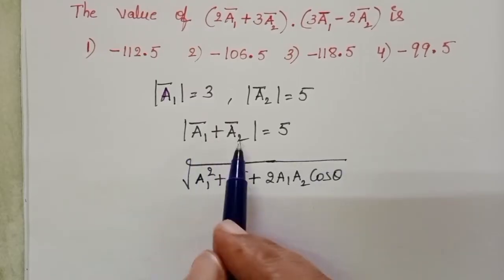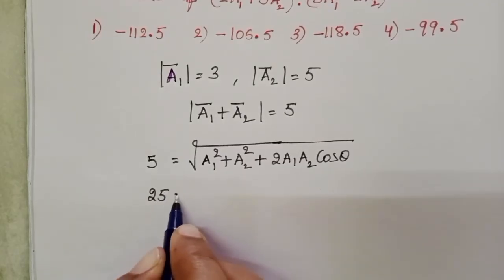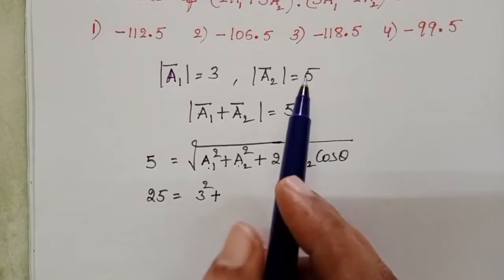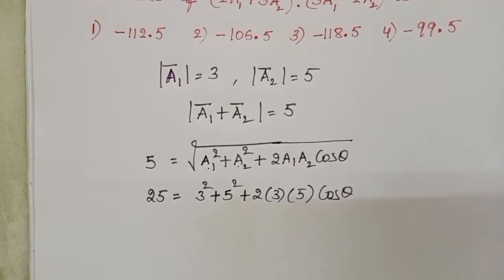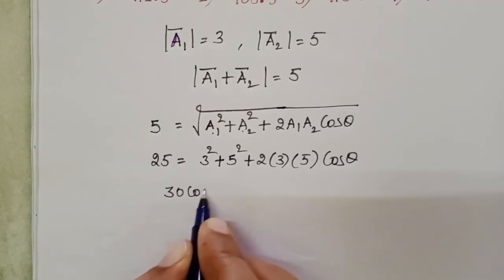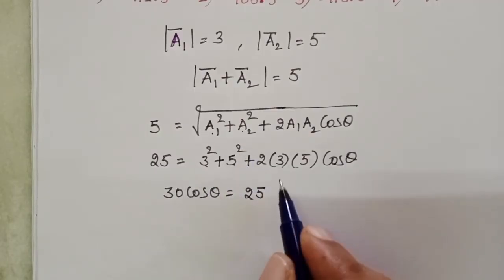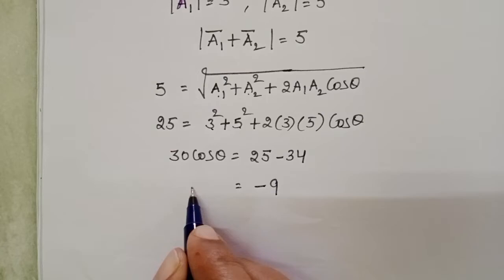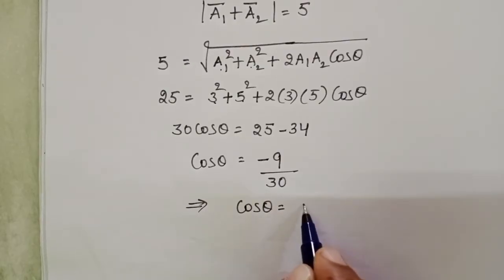The resultant of the two vectors a1 and a2 is 5. Squaring both sides: 25 equals 3 squared plus 5 squared plus 2 times 3 times 5 cos theta, which gives 25 equals 9 plus 25 plus 30 cos theta. Rearranging: 30 cos theta equals 25 minus 9 minus 25, so 30 cos theta equals minus 9, giving cos theta equals minus 9 over 30, which simplifies to cos theta equals minus 3 over 10.